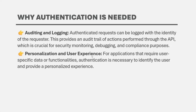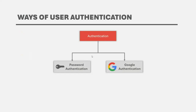Authentication can be implemented in different ways in an API application. In this course, we are going to look into two ways of authenticating a user: password-based authentication and Google Authentication. In this particular section, we are going to learn about and implement password-based authentication, and in a future section we will also look at the Google Authentication mechanism.